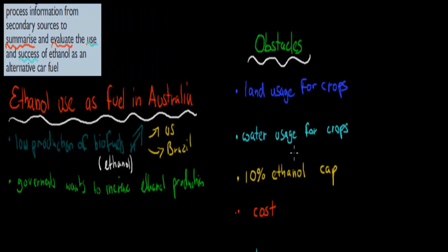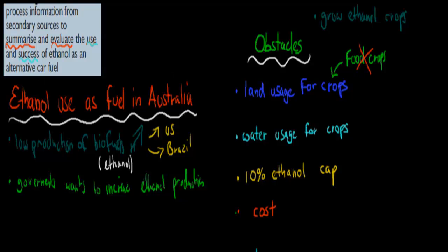First I'll talk about some of the obstacles. Land usage was a problem for these crops because we have to grow ethanol crops. We can't just drill them like we drill oil. We have to actually grow them, so we have to have land to grow. And that land can be used for other things. Land usage for crops is a problem because we also need to have food crops. Food crops are things that are like corn or wheat, anything that we usually plant in terms of food production. If we use this land to grow ethanol crops, that means we have less space for food crops.